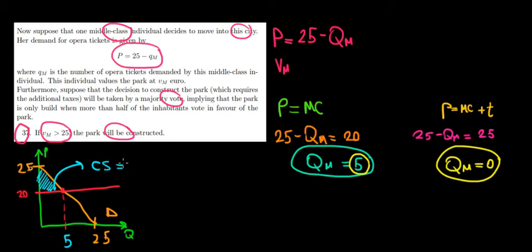The consumer surplus would be equal to one over two, one over two times the height, which is five and the length, which is also five. So five times five is 25 divided by two. It would be 12.5.